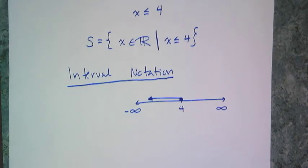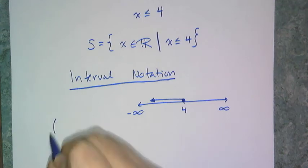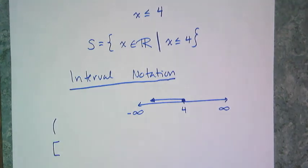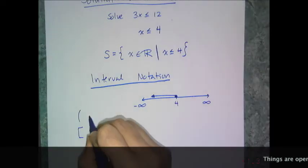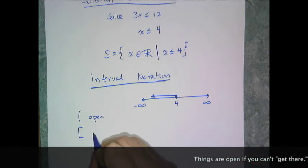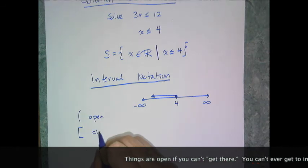Interval notation is turning the graph into sets of numbers. First off, you have two symbols you're going to possibly use: a parentheses or a bracket. The parentheses represent open, and the bracket represents closed.